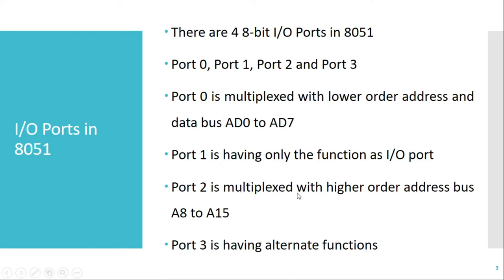Port 2 is multiplexed with the higher order address bus, that is from A8 to A15. Whenever we want to interface external memory to 8051, the maximum capacity of memory we can interface is 64 kilobytes. For that, 16 address lines are required. The lower 8 address lines are A0 to A7, and the upper or higher address bus is available from A8 to A15. These 16 address lines allow us to interface a maximum of 64 kilobytes of memory.